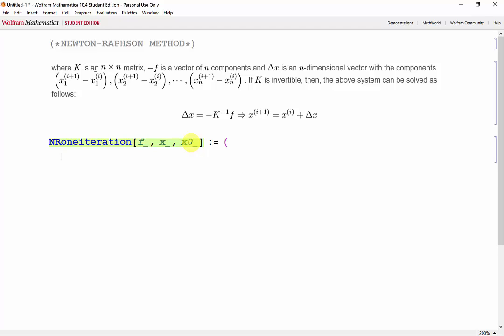All of our matrix operations will be dependent on how many variables we have, so we'll need the length of x0. So n equals the length of x0. And now this is where things get tricky. We have a vector containing our variables and a vector containing our initial guesses. We'll need to evaluate the inverse of K multiplied with f at different values depending on the variable. The easiest way to do this is to create a table of rules, just like we did in our example earlier.